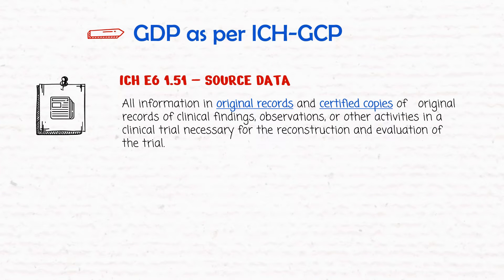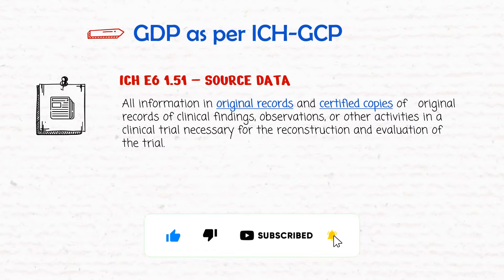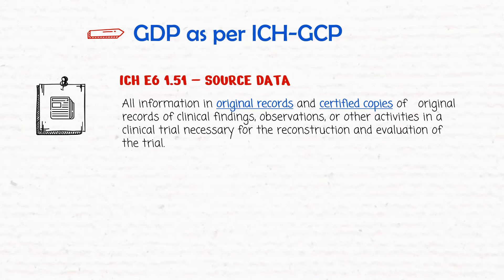Now let's look at where Good Documentation Practices are mentioned in ICH-GCP. In ICH-GCP E6, section 1.51, it explains source data as all information in original records and certified copies of original records of clinical findings, observations, and other activities in a clinical trial necessary for the reconstruction and evaluation of the trial data.